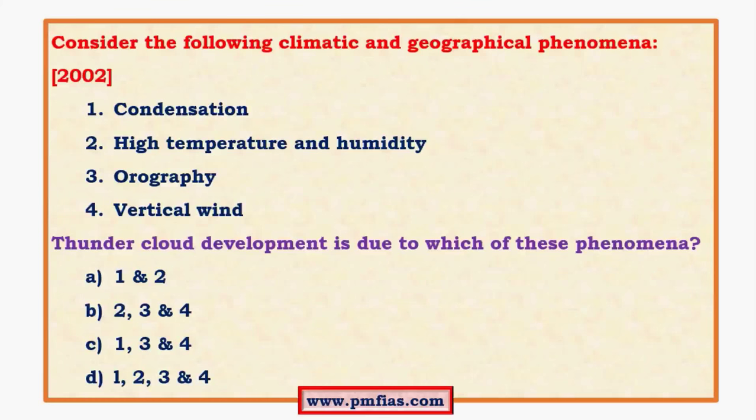Let us look at a question on thunderstorms. Consider the following climatic and geographical phenomena: condensation, high temperature and humidity, orography, and vertical wind. Thunder cloud development is due to which of these phenomena?